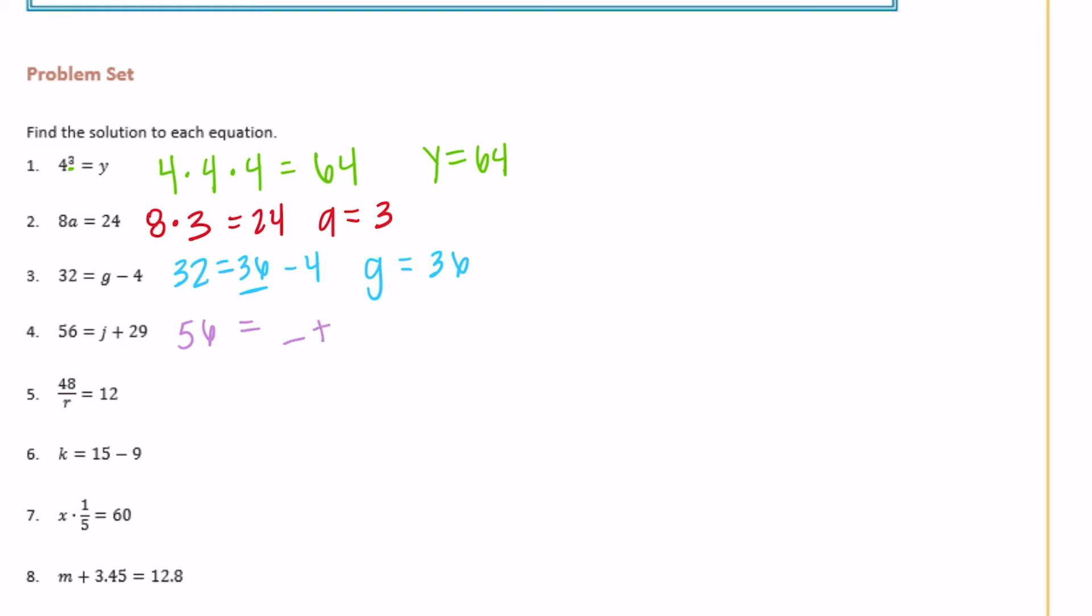So 56 is equal to what plus 29. So something plus 29 equals 56. So I'm going to figure out what this missing part could be. We got to borrow—16 minus 9 is 7, 4 minus 2 is 2—which would be 27.